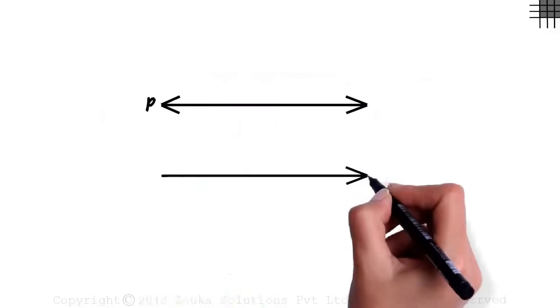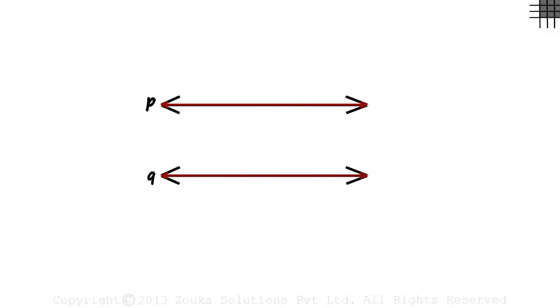Consider line P and line Q which are on a plane. The lines are parallel to each other, which means they do not intersect or ever meet. This is transversal R which cuts lines P and Q at two distinct points.